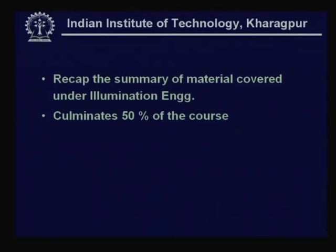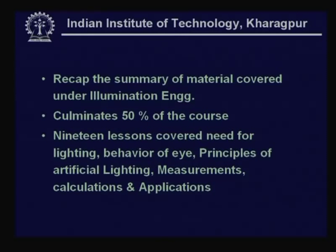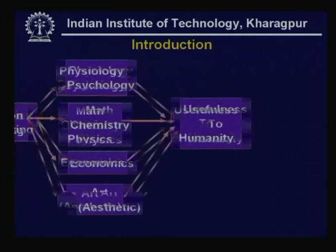This covers about 50% of the course. The 19 lessons covered the need for lighting, behaviour of the eye to lighting, principles of artificial lighting, appropriate measurements and relevant calculations, and applications in various areas. In these terms we had internal applications, external applications - interior lighting and exterior lighting. We try to have a quick recap of the entire 19 lectures in this lesson.